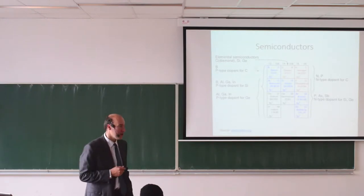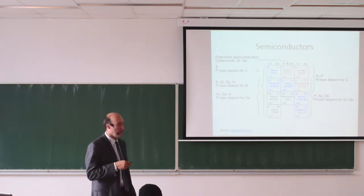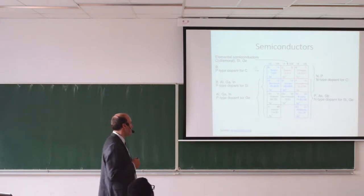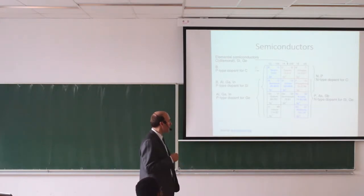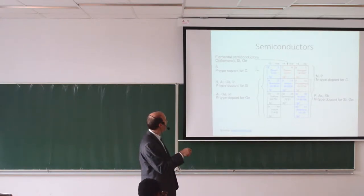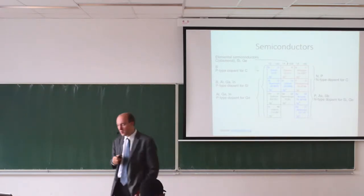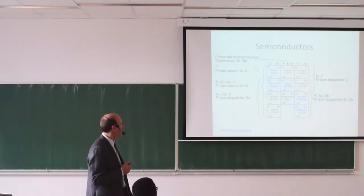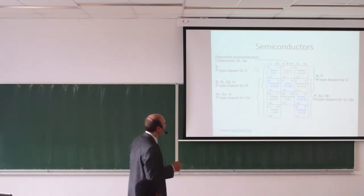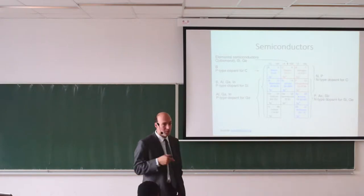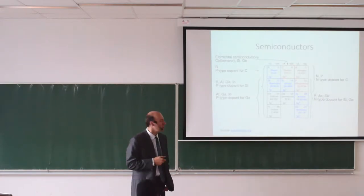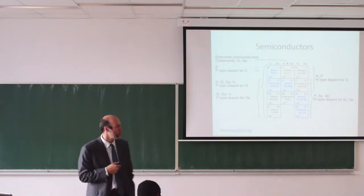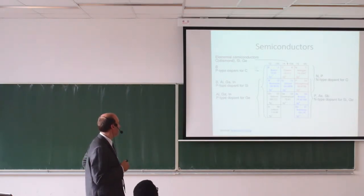Semiconductors are materials in the third, fourth, and fifth group of the periodic table. Here you have a selection of semiconductor materials. The basic material in the fourth group is silicon — a typical semiconductor material. But there are other materials as well, like germanium, used for special applications, and also carbon. For example, diamond is also a semiconductor. Those are the basic materials used in semiconductor production.